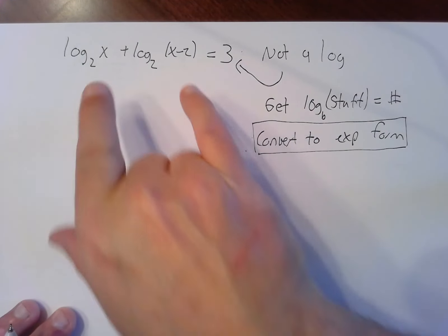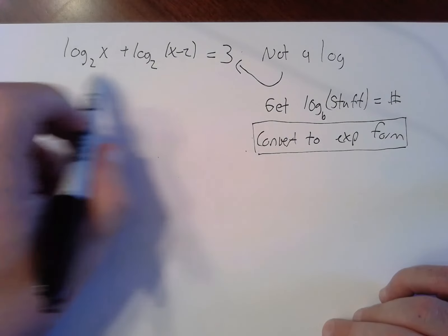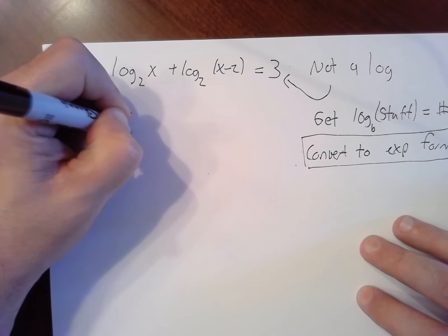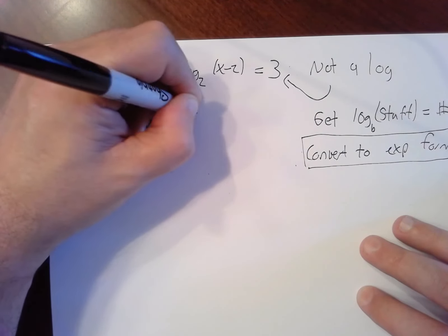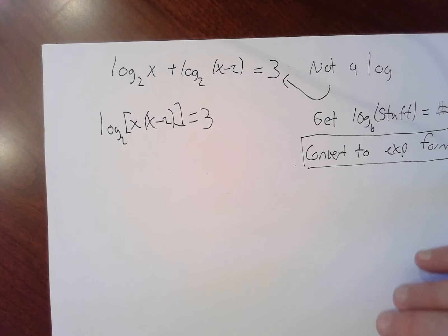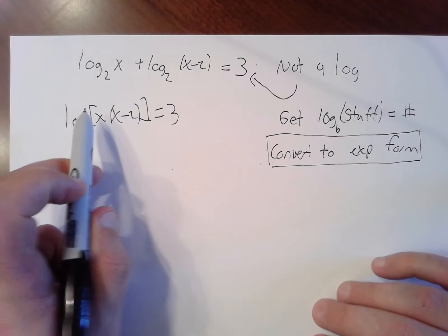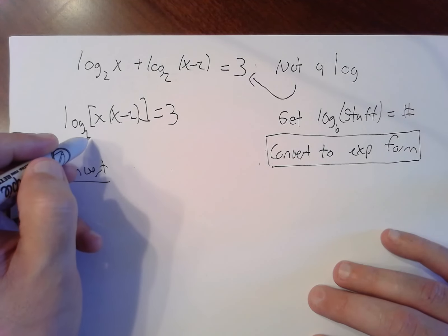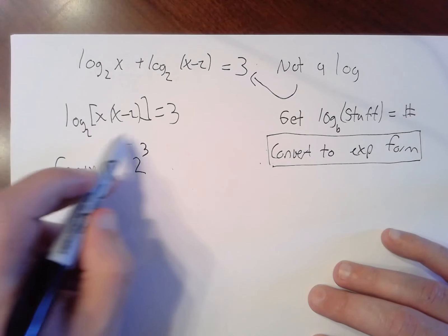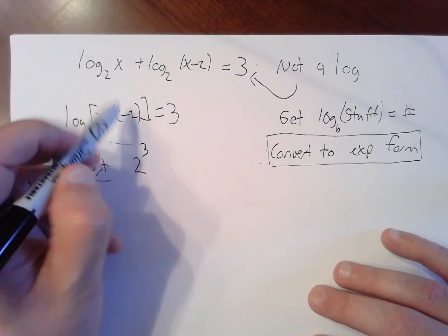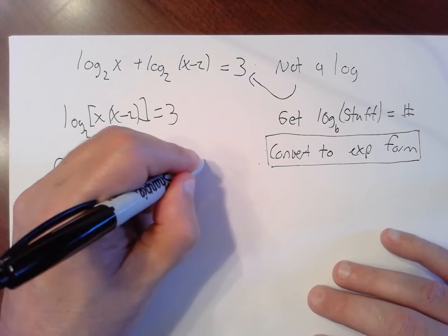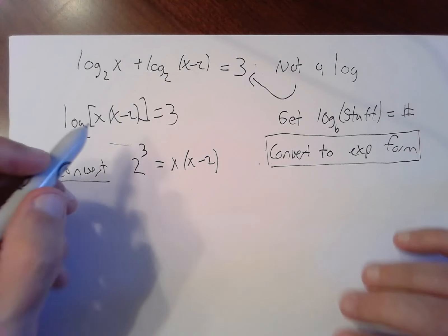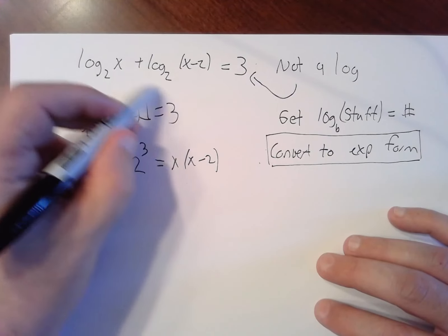In order to get that, I need one single log equals a number, so I have to squish these logs together again. Added outside becomes multiplied inside, so I'll get log base 2 of x times x minus 2 equals 3. Now I have exactly what I wanted, log one single log equals a number. Now I convert to exponential form. 2 raised to the third power, remember the answer to a log is the missing exponent, equals what was inside. The base raised to this number equals whatever is inside the log.